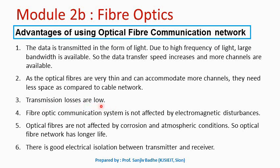Space is saved compared to conventional cable networks. Transmission losses will be low because there is no resistance — in case of conventional cables, a large amount of power is lost due to the resistance of the cable, but here transmission losses are very less. It is not affected by electromagnetic disturbances because the signal is not travelling as an electrical signal; it is travelling in the form of light, so it is less affected by electromagnetic disturbances.